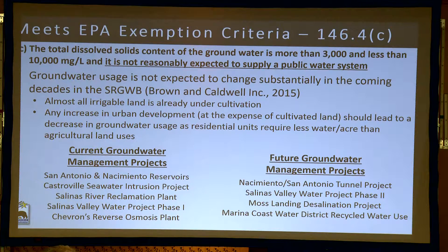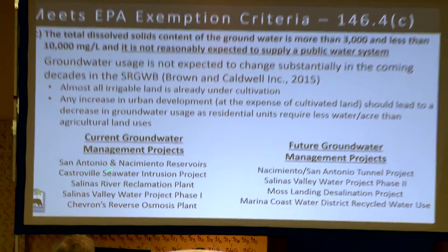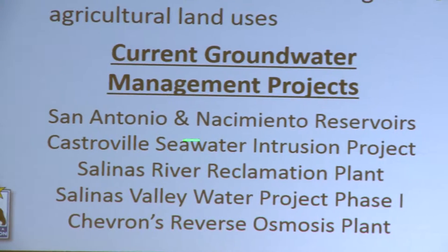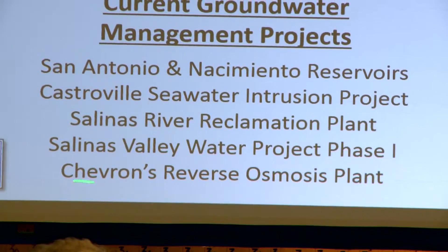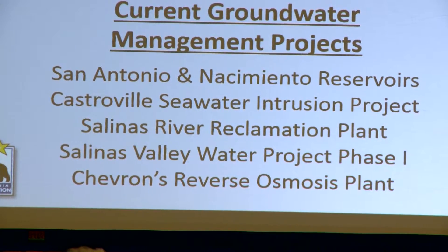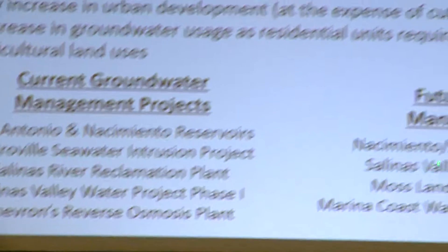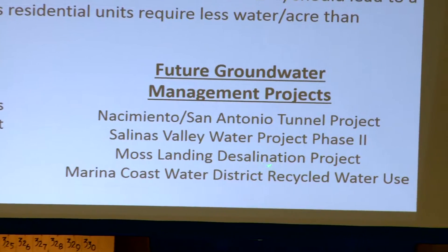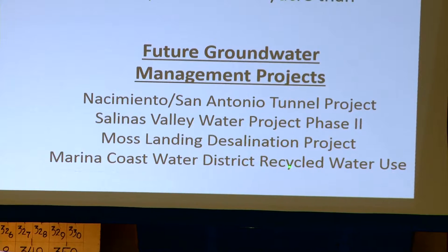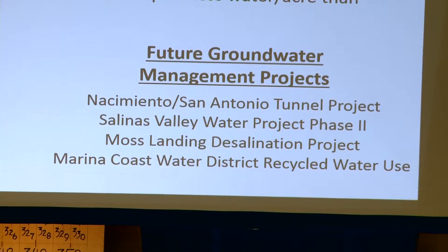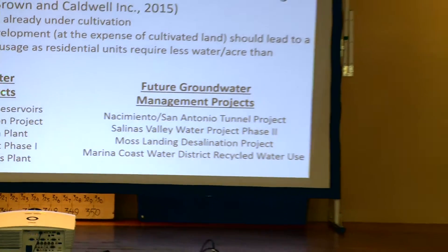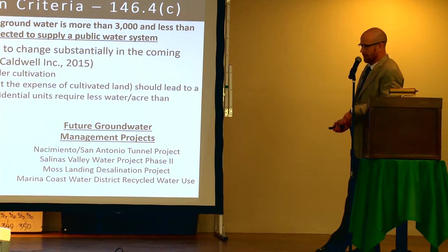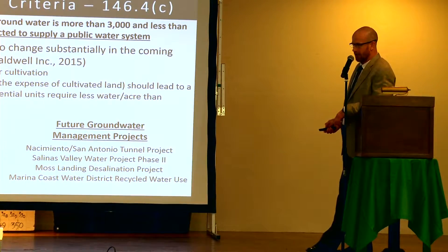When we look at the groundwater management projects in play in the Salinas River Valley and in Monterey County, we see a number of them, including the Nacimiento and San Antonio Reservoirs, the Castroville Seawater Intrusion Project, and others. Future groundwater projects include the Nacimiento–San Antonio Tunnel Project, the Salinas Valley Water Project Phase II, the Moss Landing Desalination Project, and the Marina Coast Water District Recycled Water Use. The takeaway is that none of the existing or future groundwater management projects draw on the Lombardia or the Aranac as a source of groundwater.